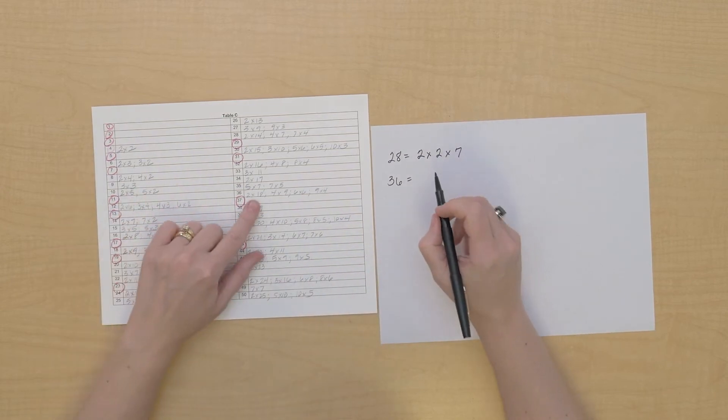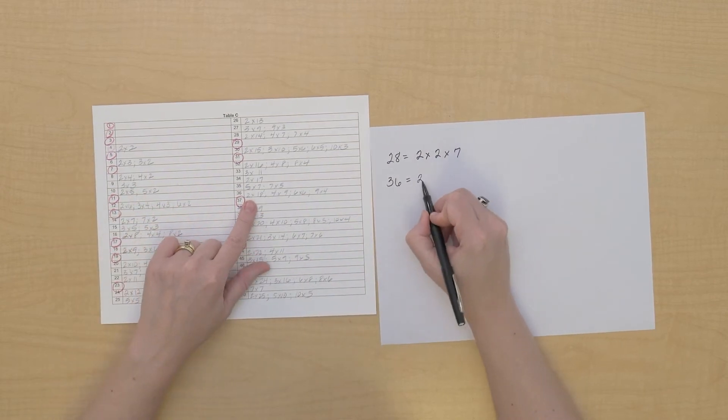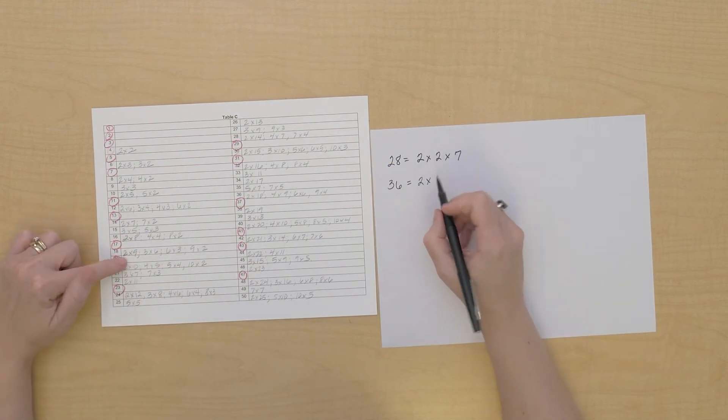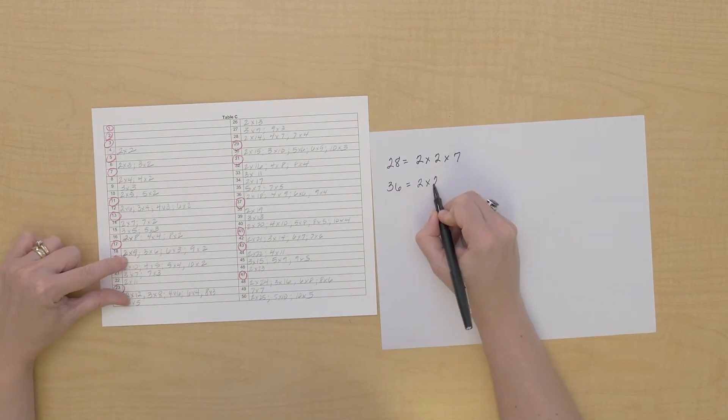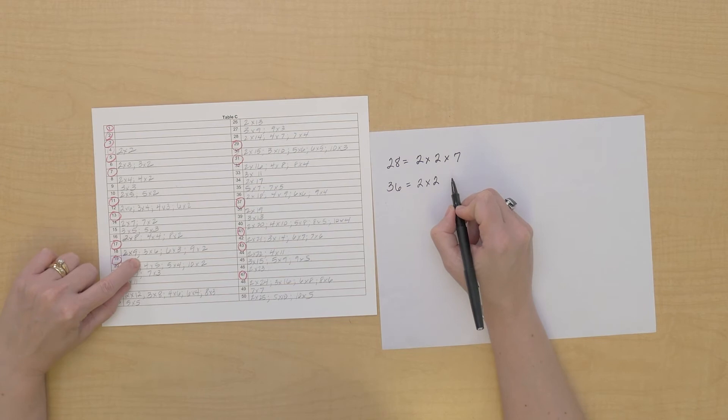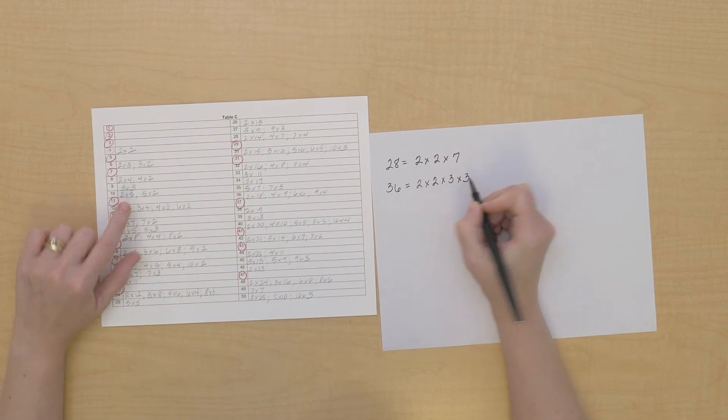And let's look at 36. 2 times 18, which is not prime. 2 times 9, which is not prime, so let's look at 9. Okay.